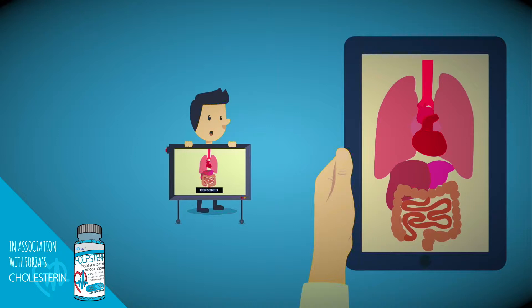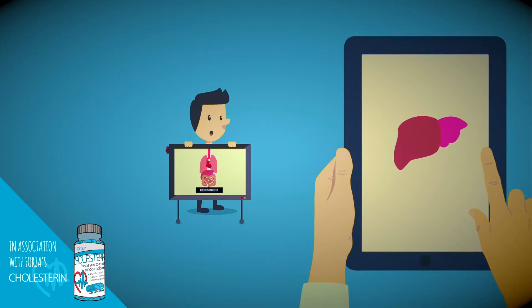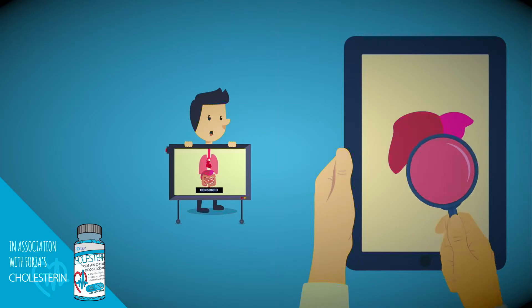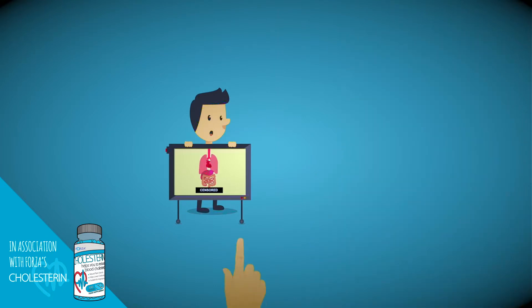But when cholesterol levels become too high, it becomes dangerous and increases your risk of heart disease. The cholesterol circulating in your blood comes from two sources. Around 75% is produced naturally by the liver. The other 25% comes from food.